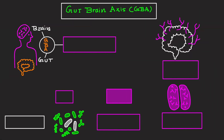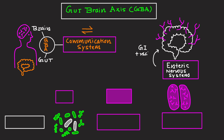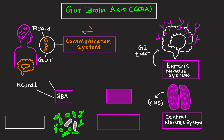Defining the gut-brain axis. The gut-brain axis is a bi-directional communication network linking the enteric nervous system of the GI tract with the central nervous system. This axis is regulated via neural, hormonal, immune, and microbial signaling pathways.